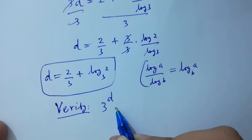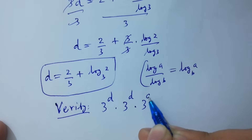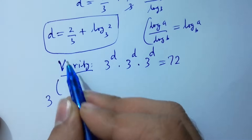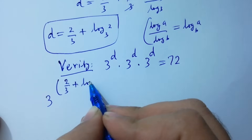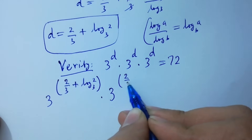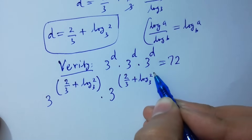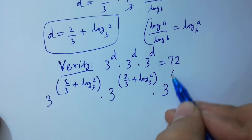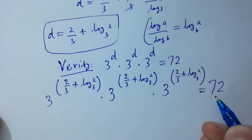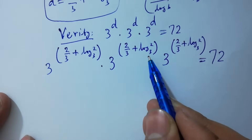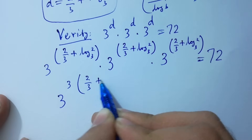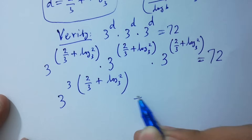Now verify: 3 to the power D times 3 to the power D times 3 to the power D equals 72. Substituting D = 2/3 + log₂(base 3), we get 3 to the power (2/3 + log 2 to the base 3) three times, which equals 3 to the power 3·(2/3 + log 2 to the base 3) equals 72.